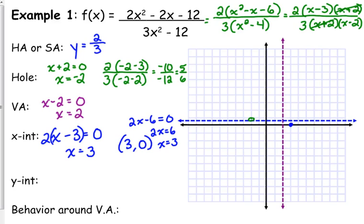For our y-intercept, we plug in 0 for x. You can plug into the original or the simplified form — I think it's easier to plug into the original. With x = 0: on top, 2x² and −2x both go to 0, leaving −12. On the bottom, we also get −12. So my y-intercept is 1, giving the point (0, 1).